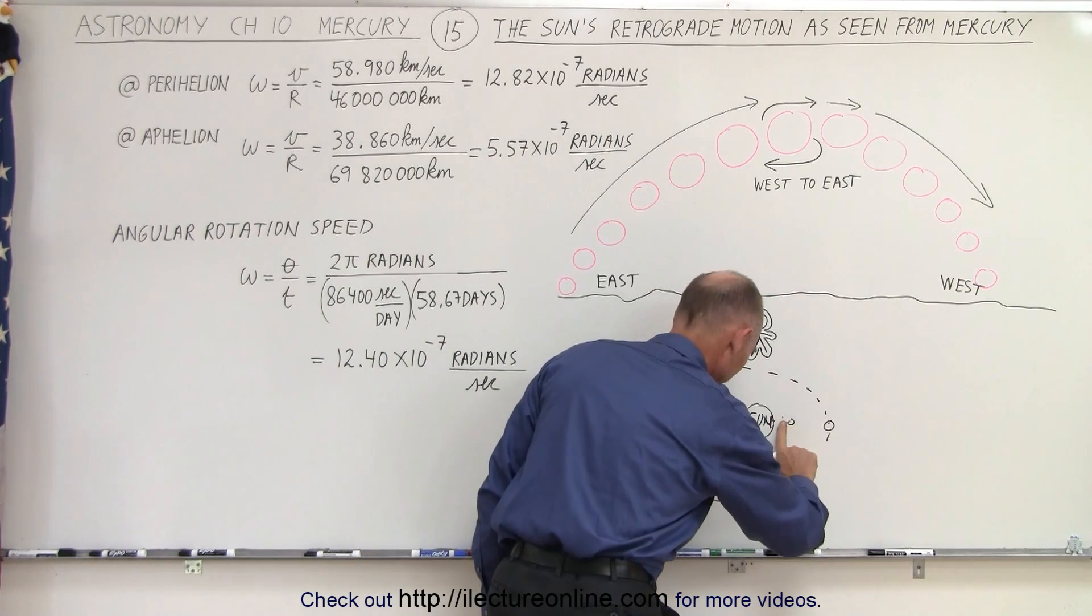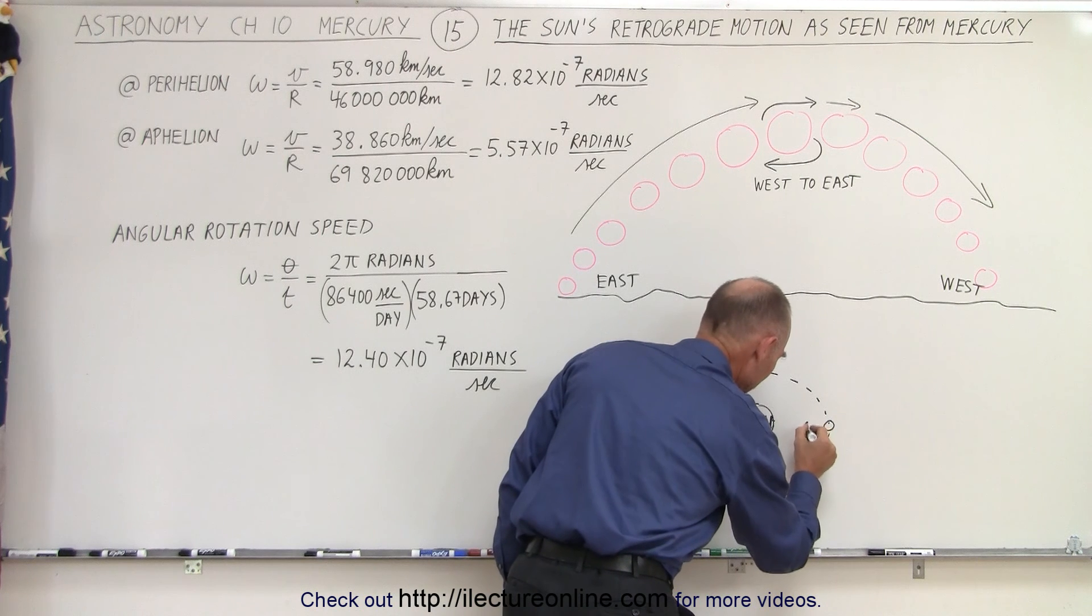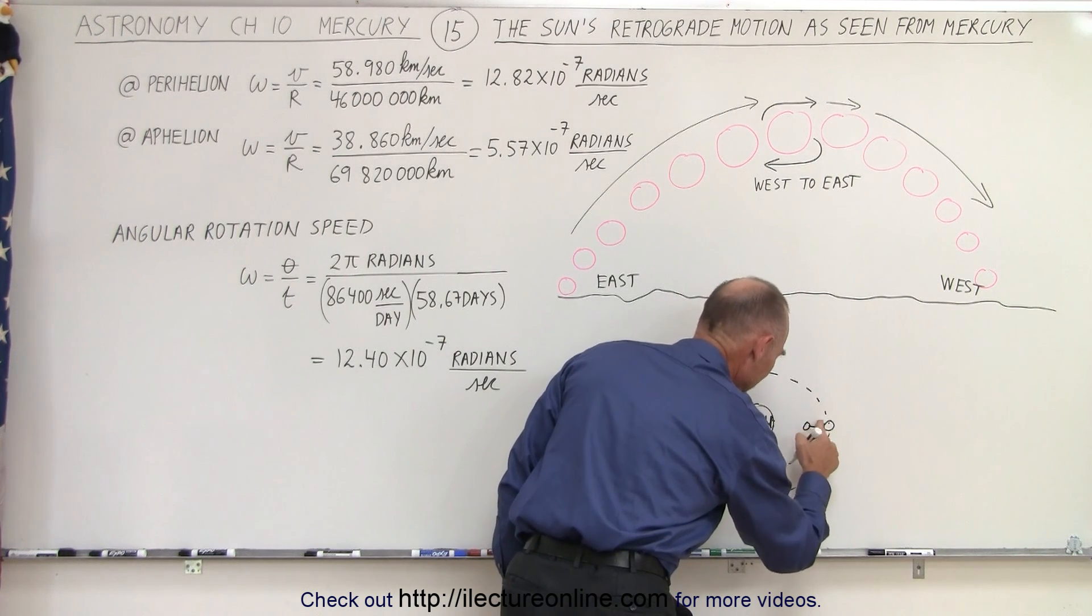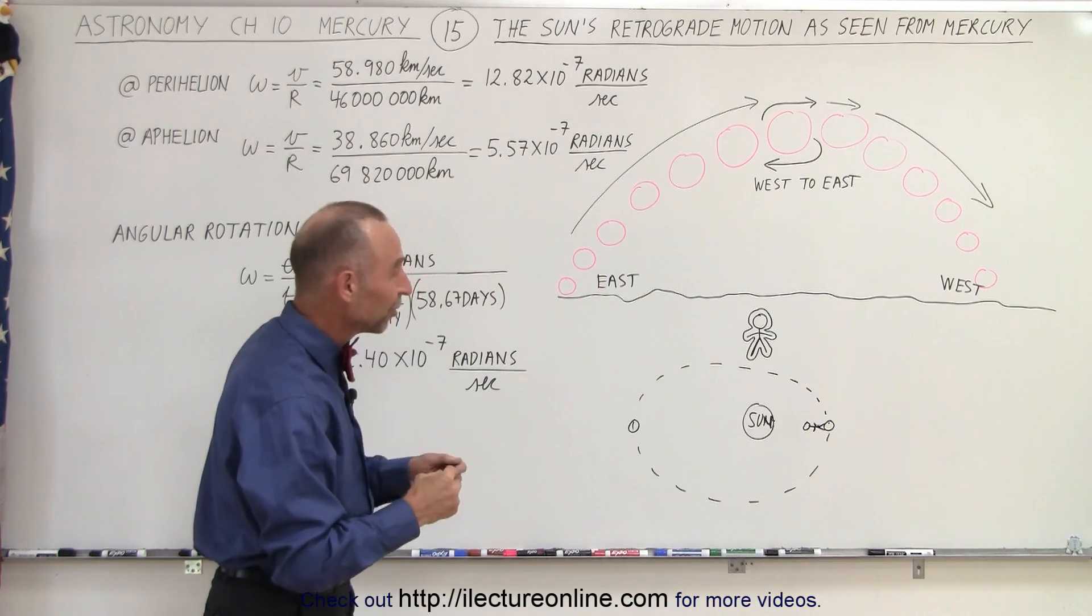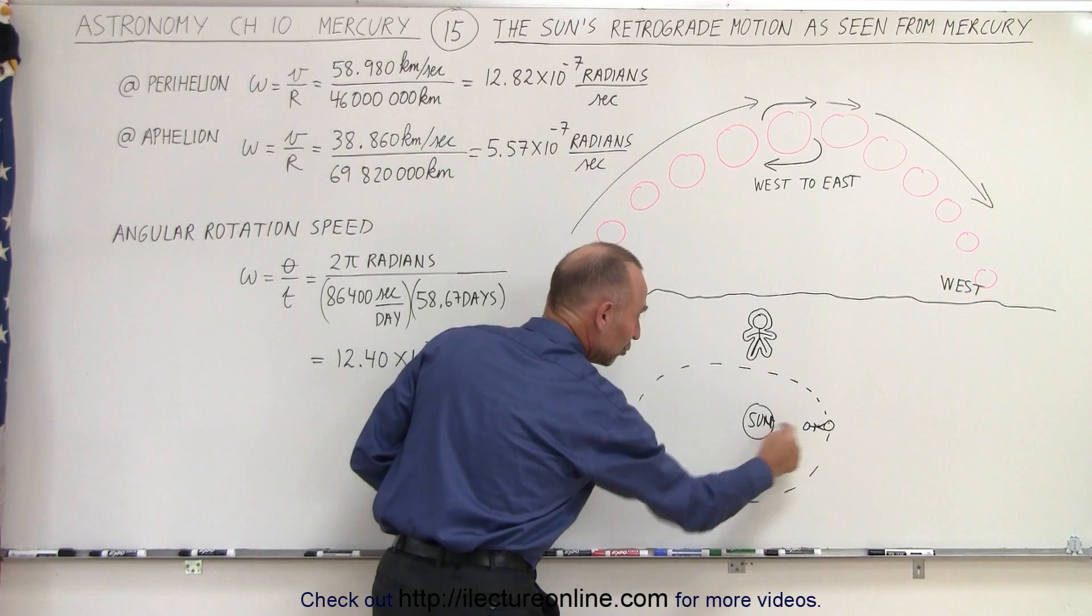If the perihelion position coincides with noon, meaning the observer is standing on this portion, let me put the observer over here. Let's say that the Sun is in the noon position like right here when you're observing the Sun.